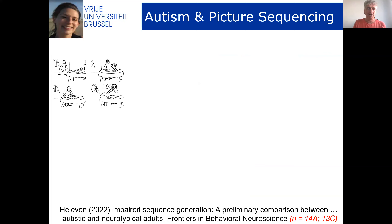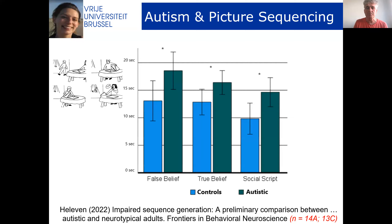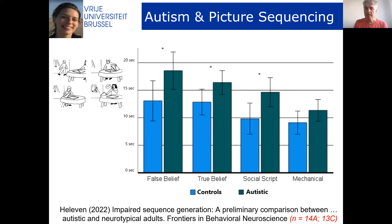We tested this using our picture sequencing task, comparing neurotypical participants with autistic participants. Autistic participants performed reasonably well but needed more time on the false belief, true belief, and social script conditions. The difference was much smaller in the mechanical conditions, indicating that the difficulties are more related to the posterior cerebellum's social mentalizing functions.